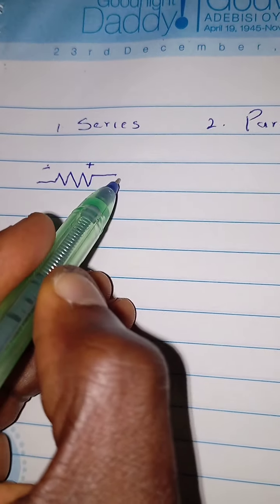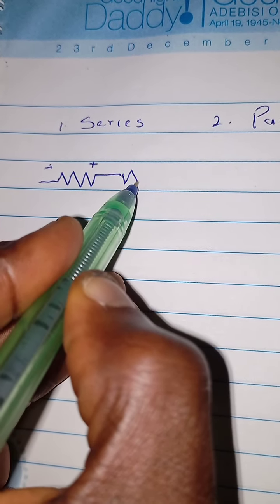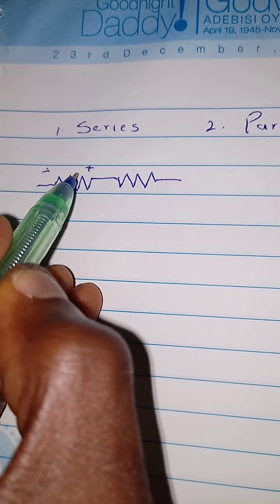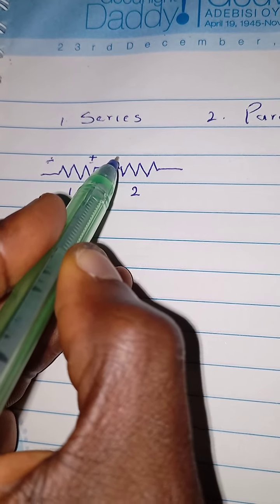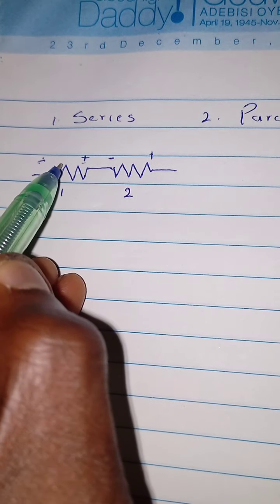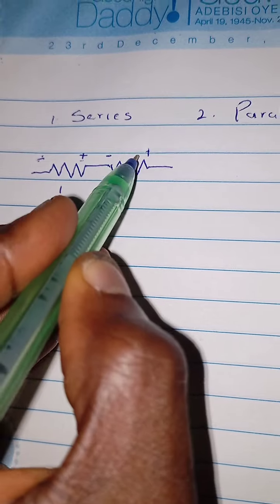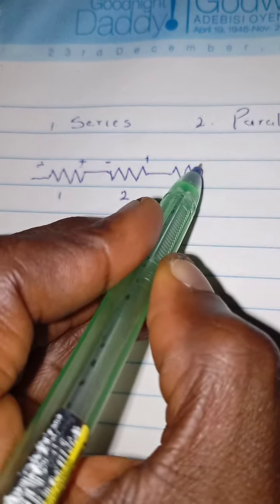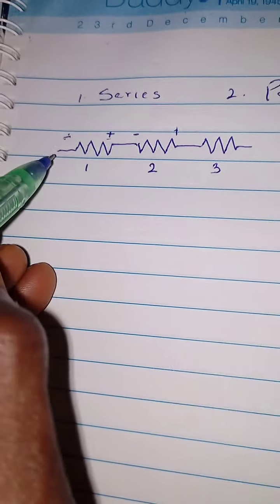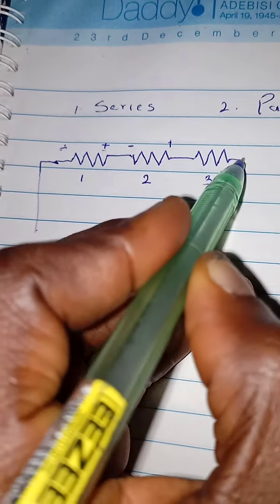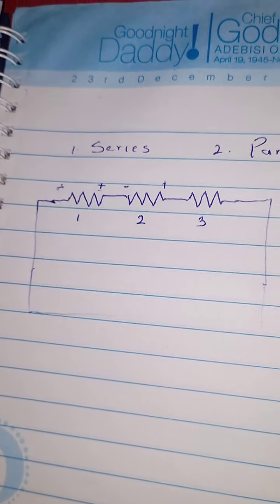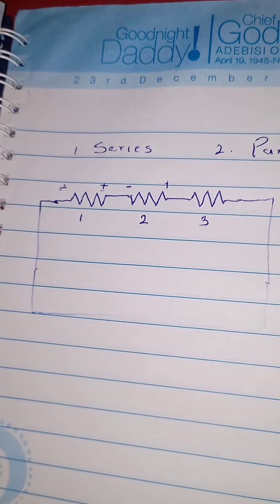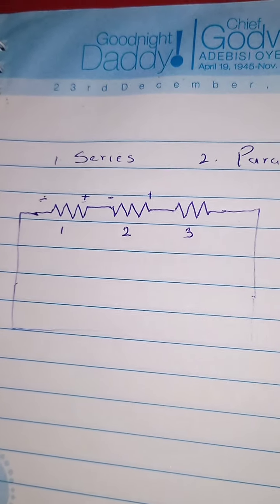This is resistor one, this is resistor two. This is the positive and negative terminal. The positive terminal of resistor one is connected to the negative terminal of resistor two, and this continues as long as we have different resistors connected in series.